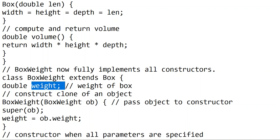The BoxWeight class has an extra field: weight. Weight is declared as a private variable. That is the constructor of BoxWeight. The Box class is the parent class of BoxWeight.